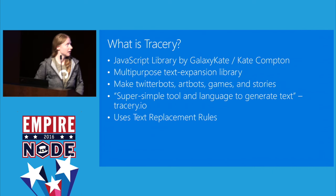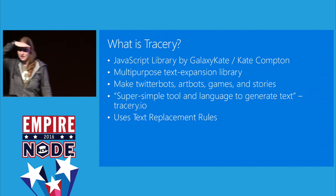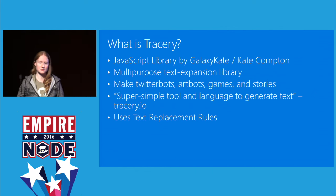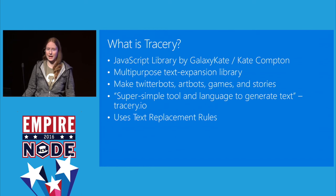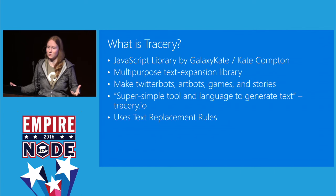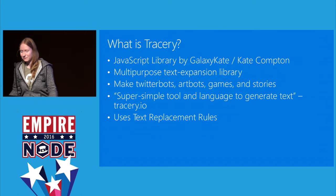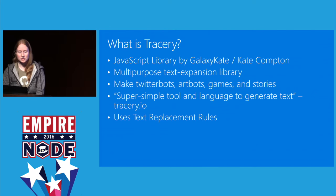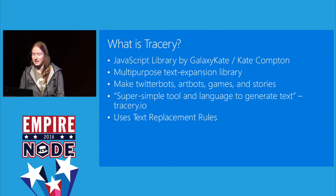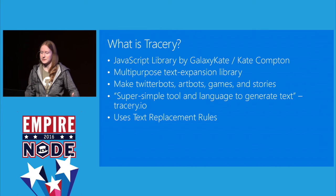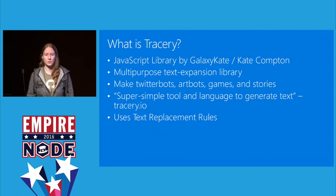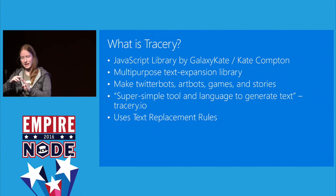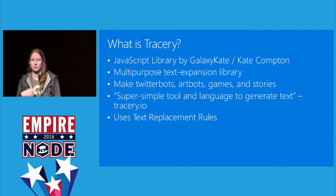What is tracery? Life is full of moments of unexpected humor, and humor has a lot of roots in the unpredictable. Tracery is a JavaScript library by Kate Compton, otherwise known as Galaxy Kate. It's a super simple tool and language to generate text. You can find out more at tracery.io. What it is, is a sort of Mad Libs text replacement tool. You can write a sentence, put hashtags around a word, and it will replace it based on a grammar set of rules that you write.